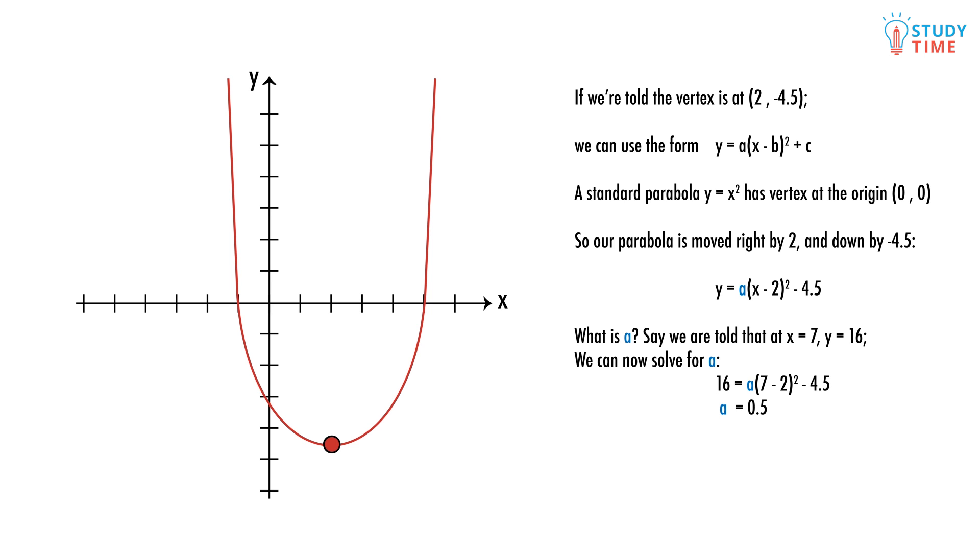As expected, this gives us 0.5 for the value of a, meaning our final equation is y equals 0.5 times (x minus 2) squared minus 4.5, which is equal to the equation we came up with before. Check it out for yourself.